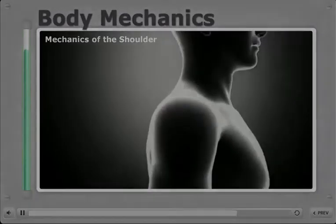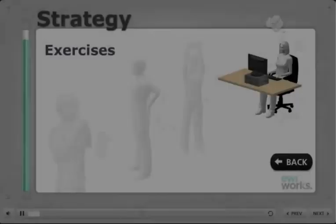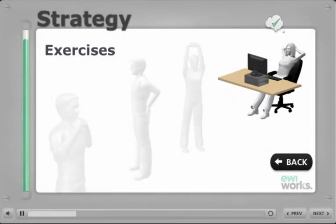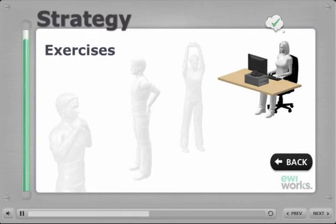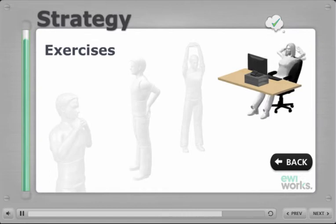For the executive stretch, sit in a chair that has a back. Place your feet comfortably on the floor, with your feet ahead of the edge of the chair. Place your hands behind your head and bring your elbows back. Gently stretch and lean back into the chair, arching your back slightly.